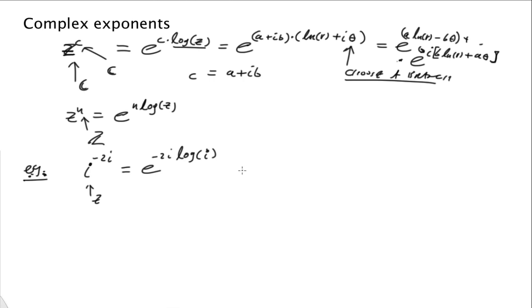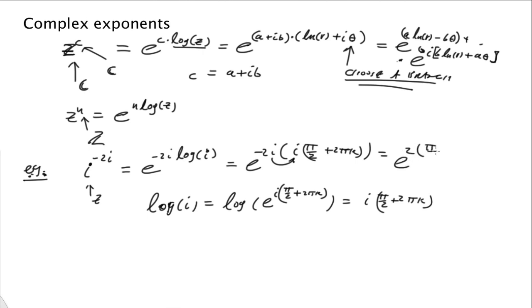So let's think of this as a multivalued function now. We're not going to choose a branch quite yet here. So log of i is going to be log of e to the i pi over 2 plus 2 pi k as follows, and that becomes i pi over 2 plus 2 pi k. So we can write that further: e to the negative 2i times i pi over 2 plus 2 pi k. So now we see there's an i and an i. That becomes negative 1 times a negative 2 becomes a positive 2, and then times pi over 2 plus 2 pi k.